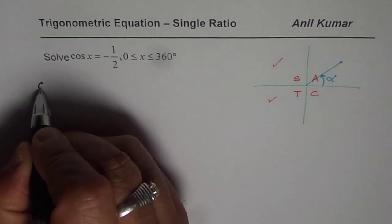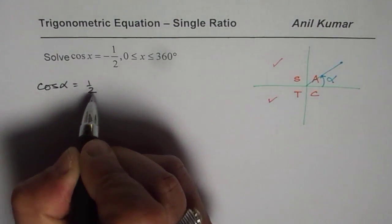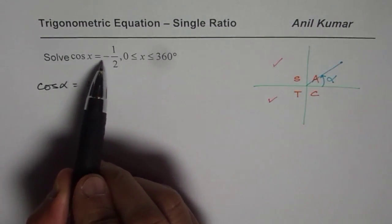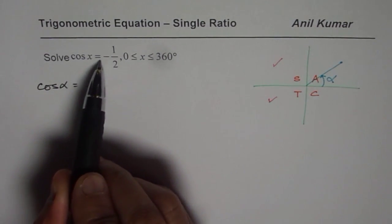So we are trying to solve for cos of alpha equals half. The question is cos x equals minus half. From here we will solve this question.